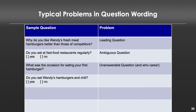'Do you eat Wendy's hamburger and chili? Yes or no?' This is a double-barreled question — asking two questions at once. What if you eat hamburgers but not chili? Or chili and not hamburgers? You can't answer, because this is asking two questions at the same time. Better to split this into two separate questions: one about hamburgers and one about chili.